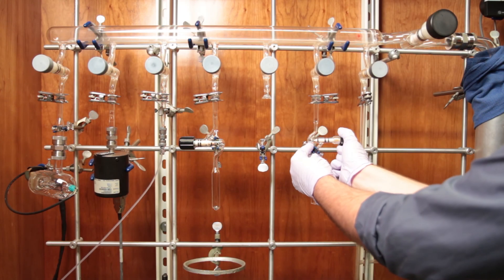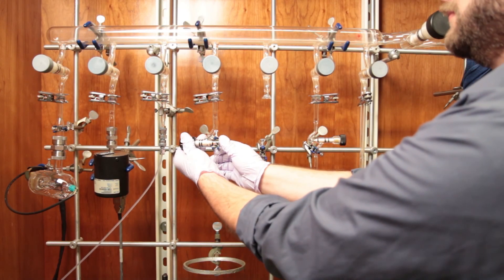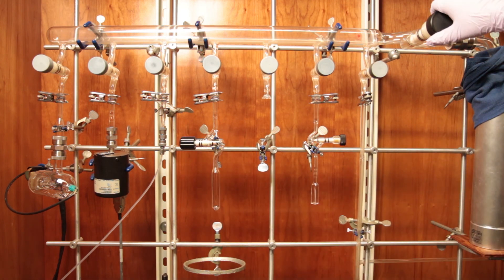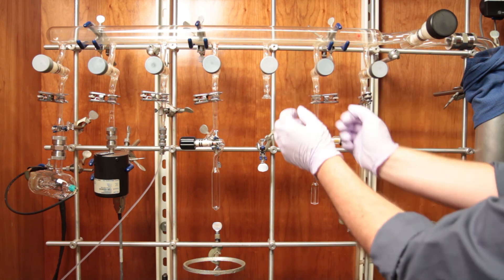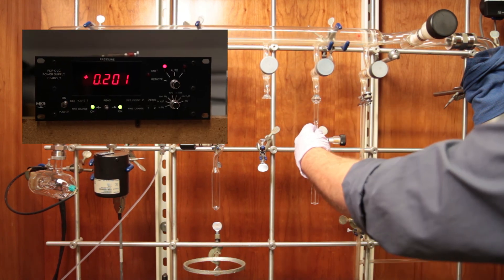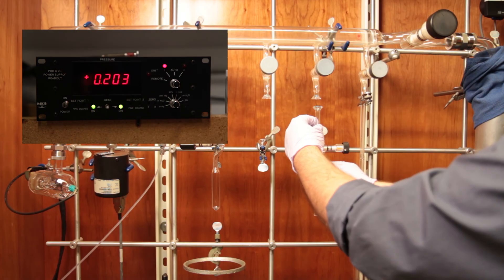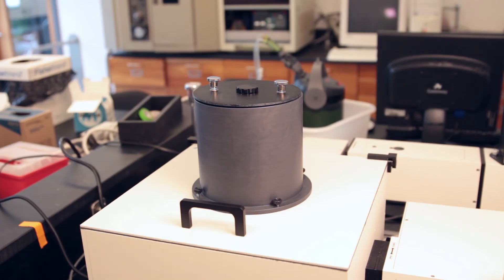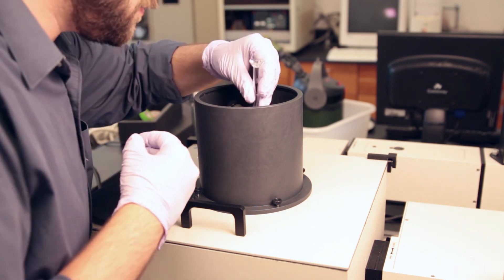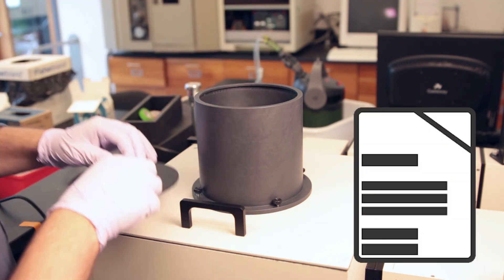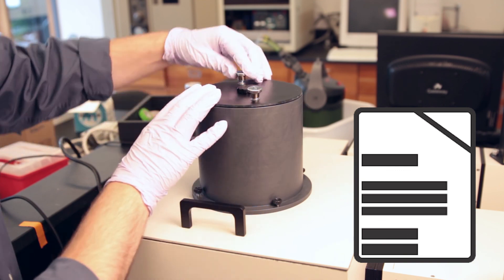With the sample degassed, we can proceed with filling our cell. At this point, the process is very similar to that of filling the cell in the HCl-DCl experiment. Our final pressure of our sample will be roughly 220 millitorr. With our sample cell filled, we can remove it from the line and acquire an emission spectrum. Please refer to the handout for further details on recording the spectrum.